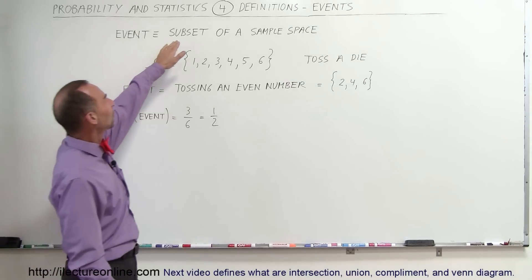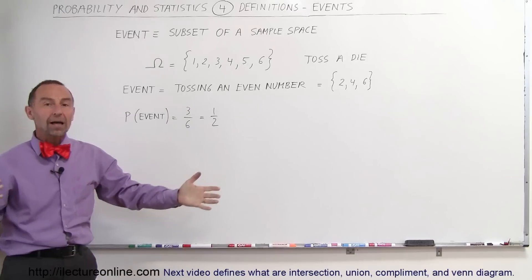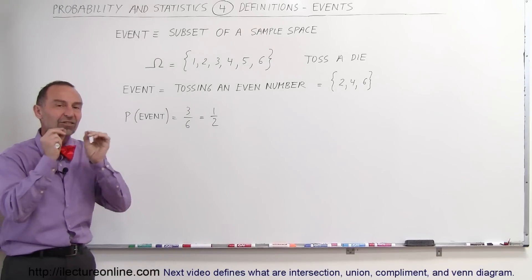It says that it's a subset of a sample space. Remember, sample space is all the possible outcomes. So an event is a subset of that.